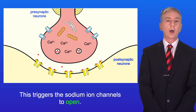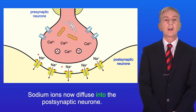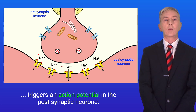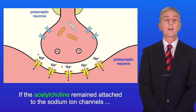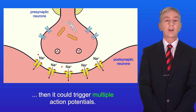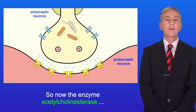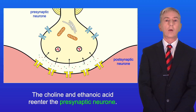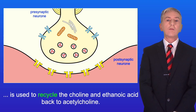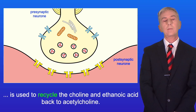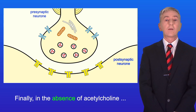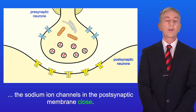This triggers the sodium ion channels to open. Sodium ions diffuse into the post-synaptic neuron, and this influx of sodium ions triggers an action potential in the post-synaptic neuron. Now if the acetylcholine remained attached to the sodium ion channels it could trigger multiple action potentials. So the enzyme acetylcholinesterase hydrolyzes the acetylcholine to choline and ethanoic acid. The choline and ethanoic acid re-enter the presynaptic neuron, where energy from ATP is used to recycle them back to acetylcholine. The acetylcholine is then stored in the vesicles to be used again. Finally, in the absence of acetylcholine, the sodium ion channels in the post-synaptic membrane close.